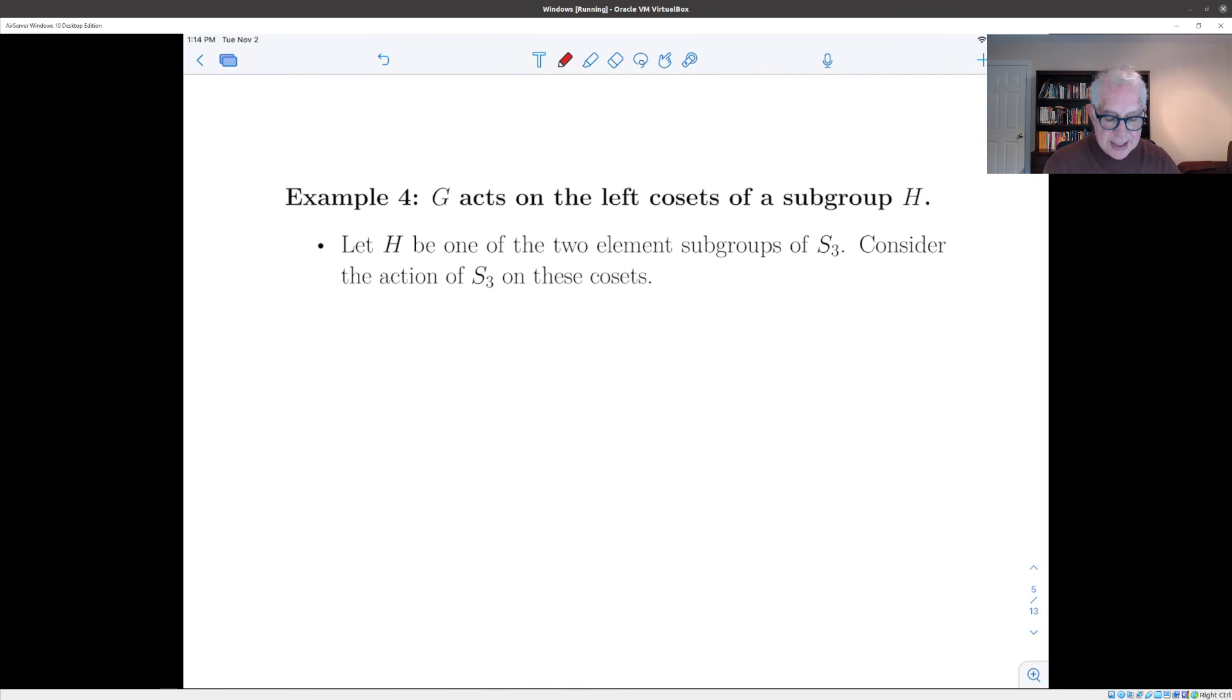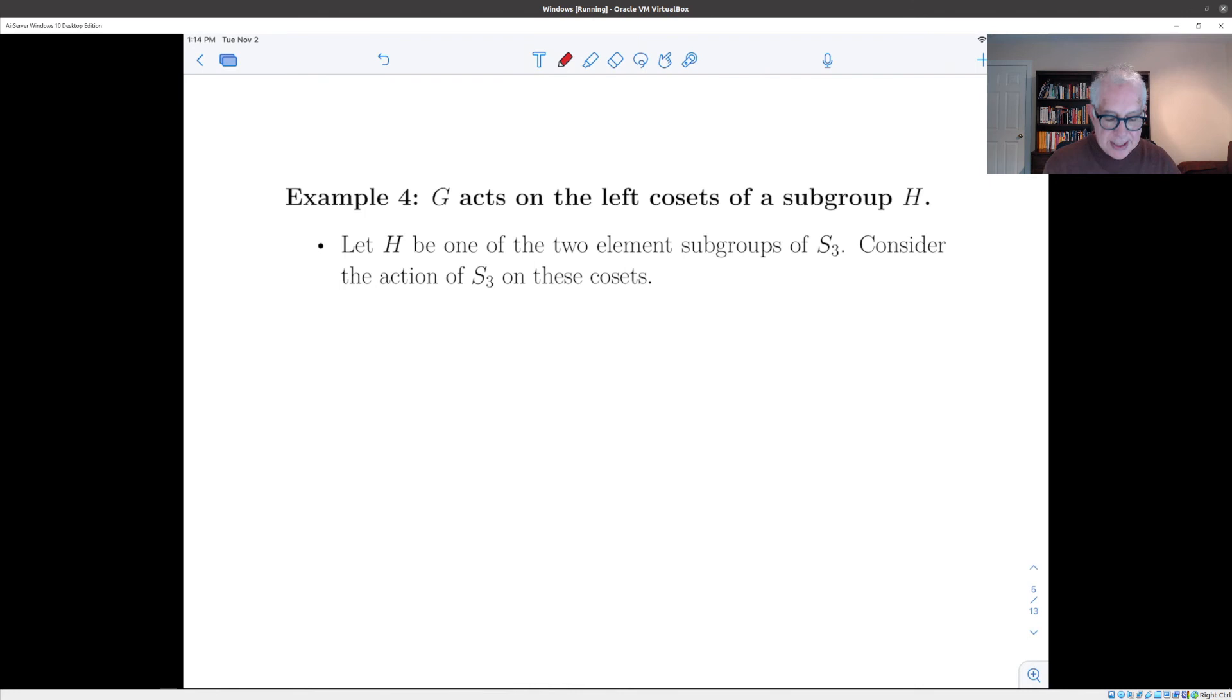And the last example I want to give is another abstract example that you can get from any group. Namely, suppose G is just any group, and H is a subgroup of G, and we let G act on the, I don't assume that H is normal, but I do let G act on the left cosets of H. By the rule, g applied to xH is just, you multiply the coset by g, and you get another coset. And this is a map from group cross the cosets to the cosets.